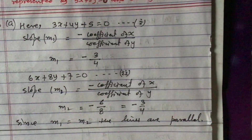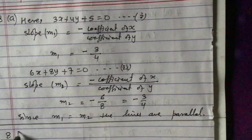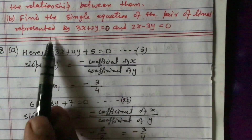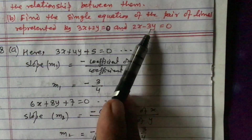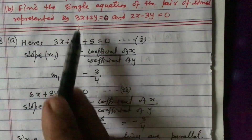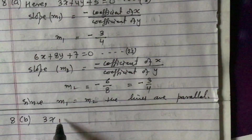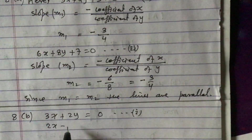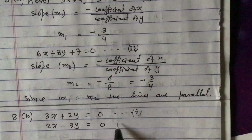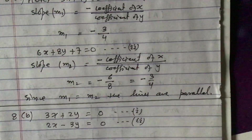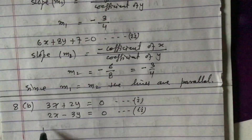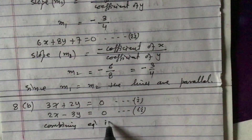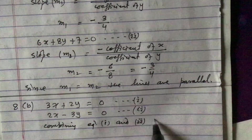Now we will answer question number 8B. The question asks: find the single equation of the pair of lines represented by 3x plus 2y equals 0 and 2x minus 3y equals 0. Let us write down these two equations: equation 1 is 3x plus 2y equals 0, and equation 2 is 2x minus 3y equals 0. We are asked to combine these two equations.